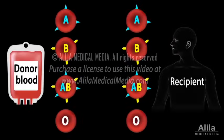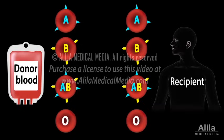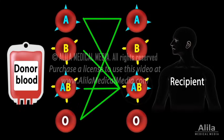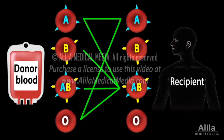Applying the rule, a type A patient who is negative for B antigen can only receive blood from type A and type O donors, whose blood does not contain B antigen. A type AB patient having both antigens can receive blood from anyone, while a type O person, being negative for both A and B, can only receive from type O donors but can give blood to anyone.